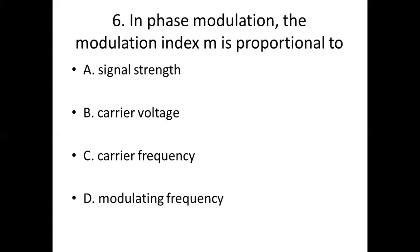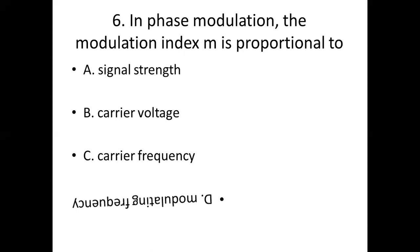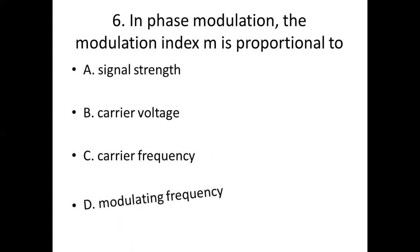Sixth bit. In phase modulation, the modulation index M is proportional to: Option A, signal strength. Option B, carrier voltage. Option C, carrier frequency. Option D, modulating frequency. Answer: Option D, modulating frequency.